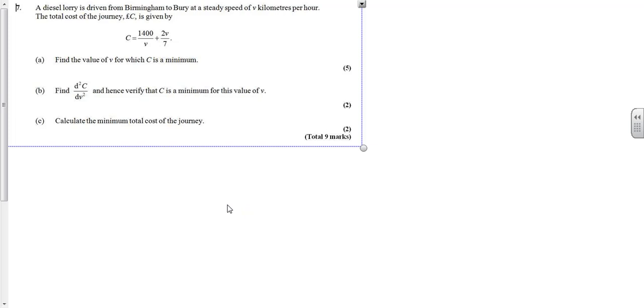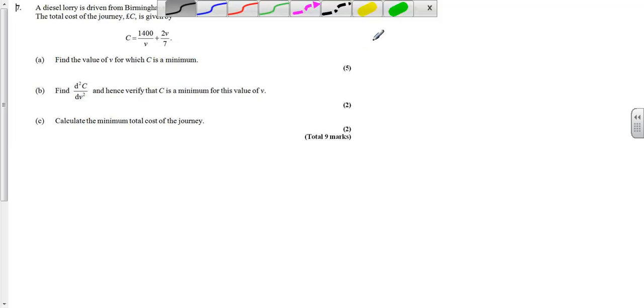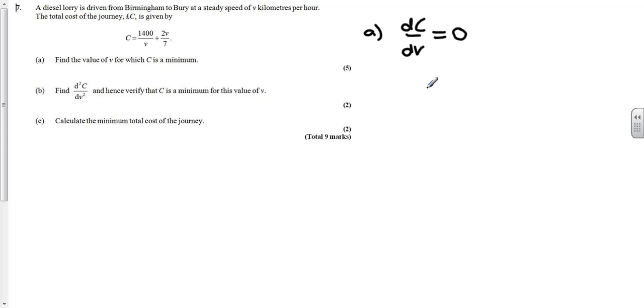To begin with, for part A, it wants to find the value of v where C is a minimum. For C to be a minimum, then the rate of change of the cost with respect to the speed will be zero. Essentially, if you imagine a graph of it, the minimum point would be where the gradient is zero, so that's what we're going to find first of all.